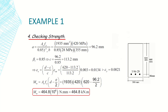The second check is verifying the value of φ. I assume the steel has yielded at failure, and I need to confirm this. Based on this assumption, I determine φ, which is multiplied by M_n to confirm the beam's capacity.